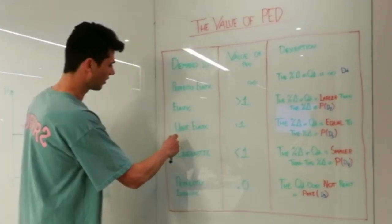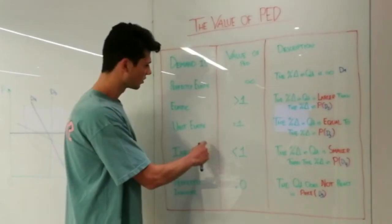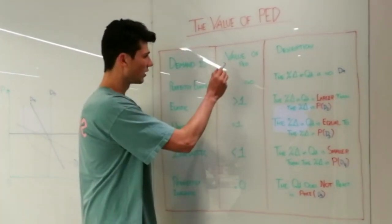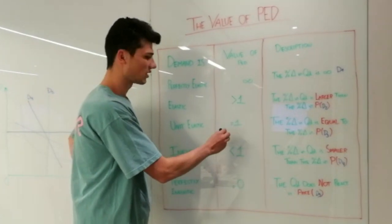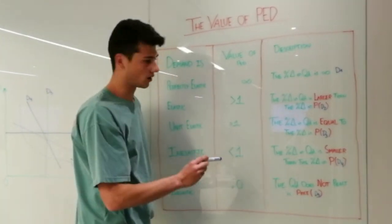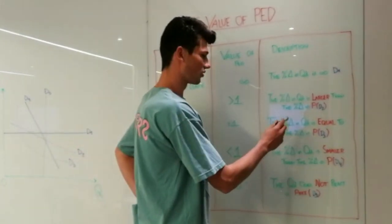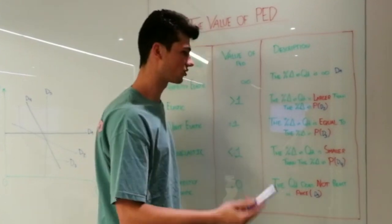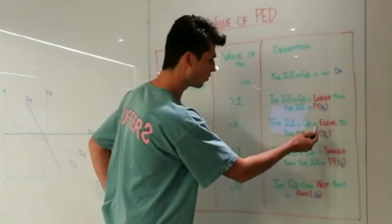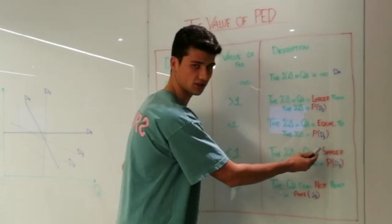Next, I'm going to explain the unit elastic type. In this one, the value of the PED has to be equal to one, in the sense that the percentage change in quantity demanded has to be equal to the percentage change in price.